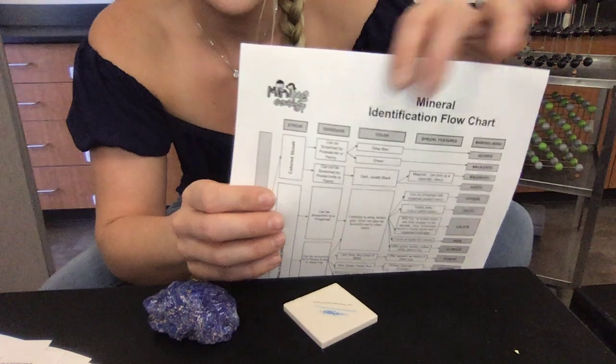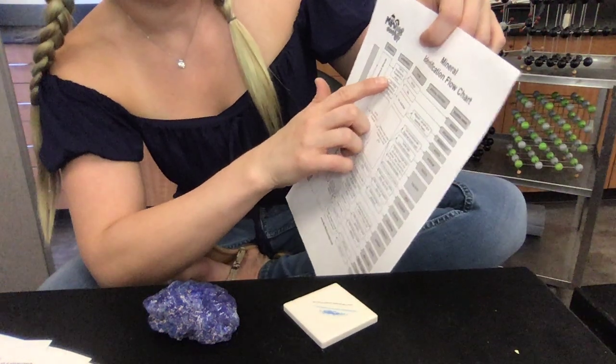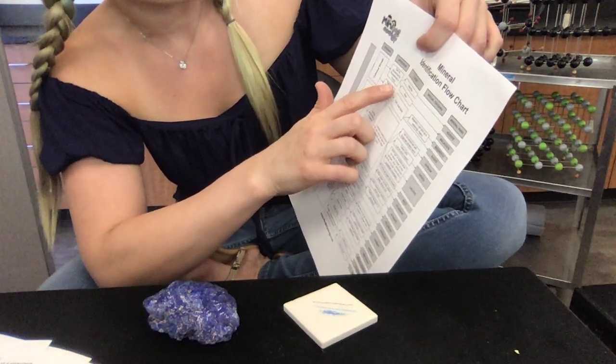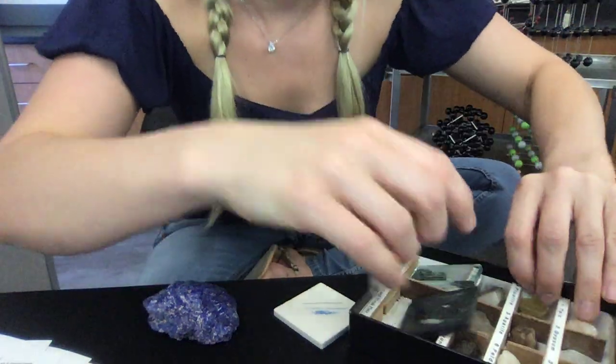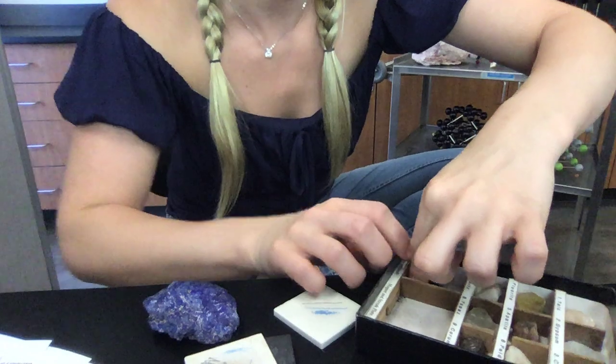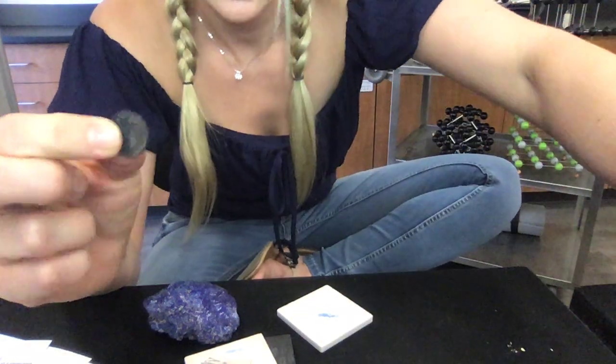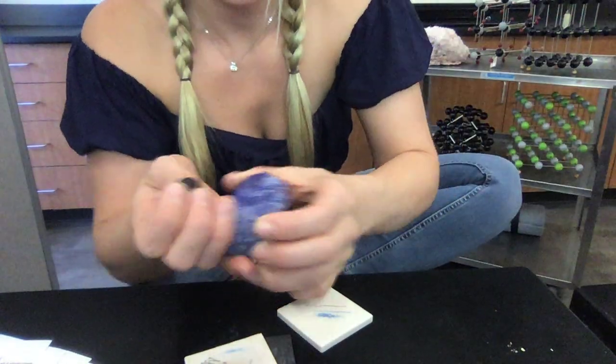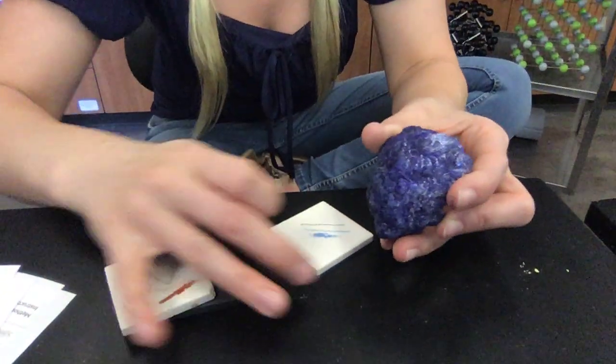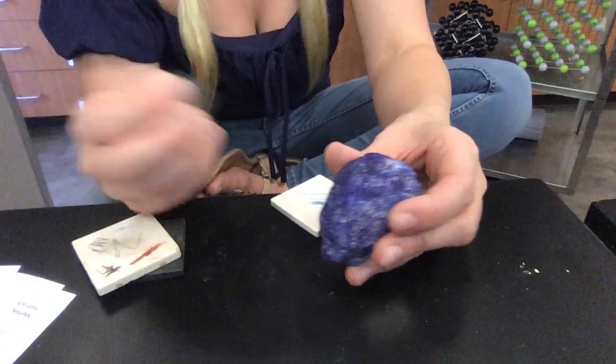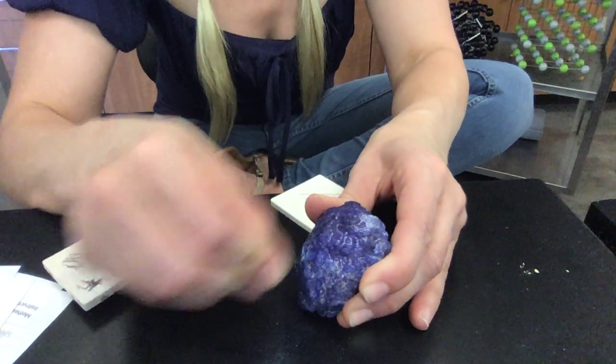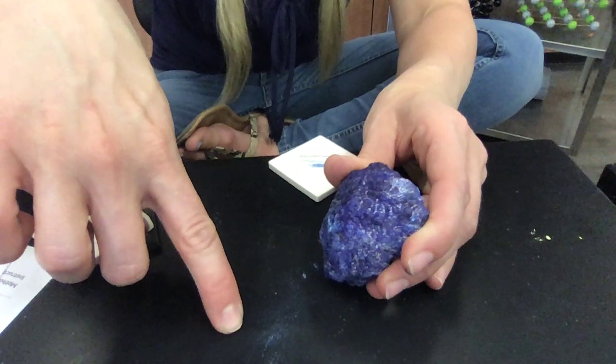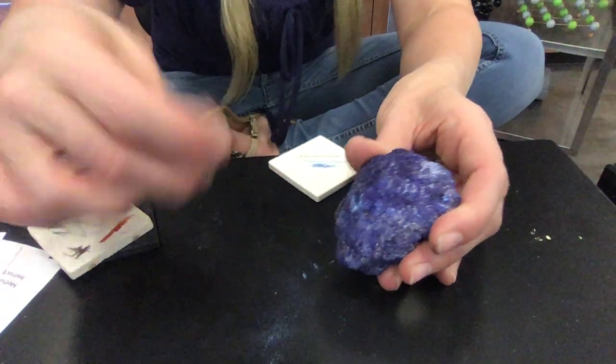And it says can be scratched by a pocket knife or penny. So I've got a penny in my hardness kit here. Let's get it out. There's our penny. It's looking a little rough, but you'll see that this is a really soft mineral because it can be scratched by copper, which is a fairly soft metal. So I'm rubbing it along there and all this blue powder just came off onto the table because this was scratched by the penny. So check, it can be scratched.